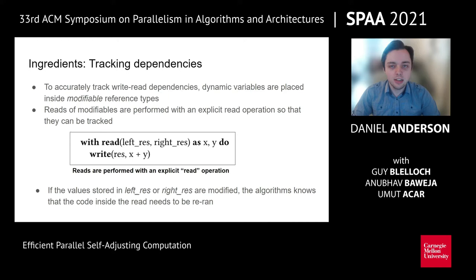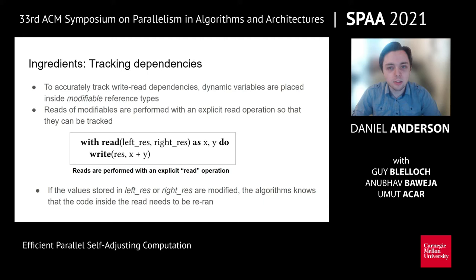The first ingredient needed for self-adjusting computation is a way of tracking read-write dependencies. Most frameworks, including ours, place dynamic variables inside what are called modifiable reference types. Reads of these modifiable reference types are made explicit with an explicit read operation, allowing you to track precisely which parts of computations depend on which variables. For example, a block of code might read the values of left_res and right_res into local variables x and y, then write the result of x plus y into a modifiable reference called res. We then know that if left_res or right_res ever changes, this block of code is out of date and needs to be re-run.